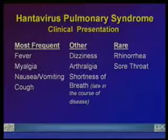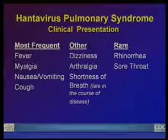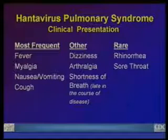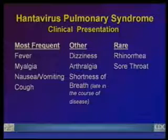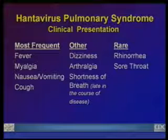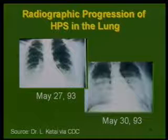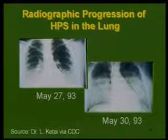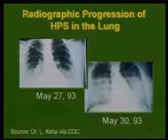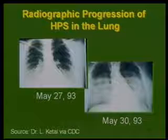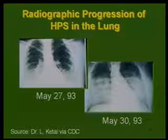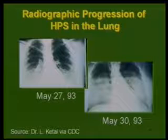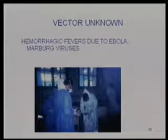Symptoms include fever, myalgia, cough, nausea, vomiting, and shortness of breath because the lungs fill up — predominantly lower respiratory tract, though occasionally upper respiratory tract symptoms occur. An X-ray example shows a patient on May 27th who is not feeling well, and by May 30th there's dramatic fluid accumulation in the lungs. This patient actually survived because with prompt intensive care, hantavirus pulmonary syndrome can be managed to a certain extent.